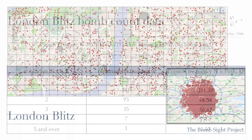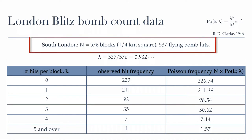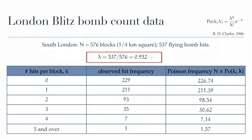Here, for example, are some data collected by R. D. Clarke in 1946 for a region of South London, where he divided the region into 576 blocks and recorded 537 flying bomb hits. What is the average number of hits per block? Lambda is 537 divided by 576, or about 0.9 bombs per block — so each block received about one bomb on average.